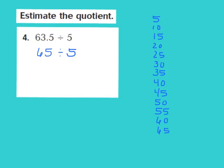When I divide 65 by 5, counting up: 5 goes into 65 thirteen times. So my estimated quotient turns out to be about 13.